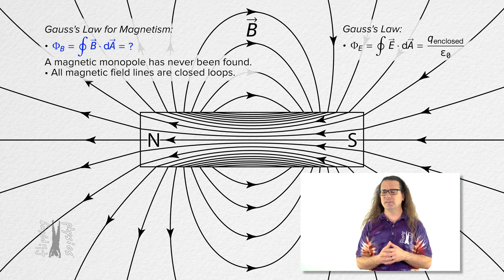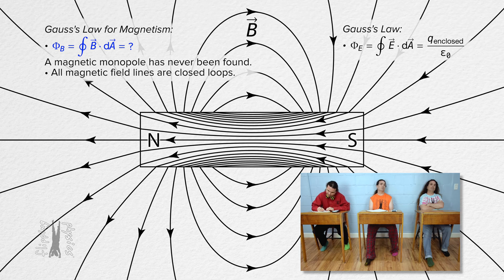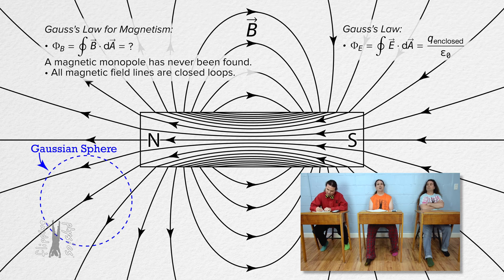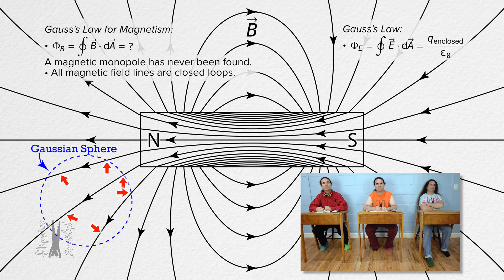We are trying to determine what the magnetic flux through a closed surface equals. Bobby, what do you think? Well, I guess we should draw a Gaussian surface and see what we see. Let's start with a sphere for a Gaussian surface. Magnetic flux is the measure of the number of magnetic field lines which pass through a surface. Right. You can see that every magnetic field line which goes into the Gaussian surface also comes out of the Gaussian surface.